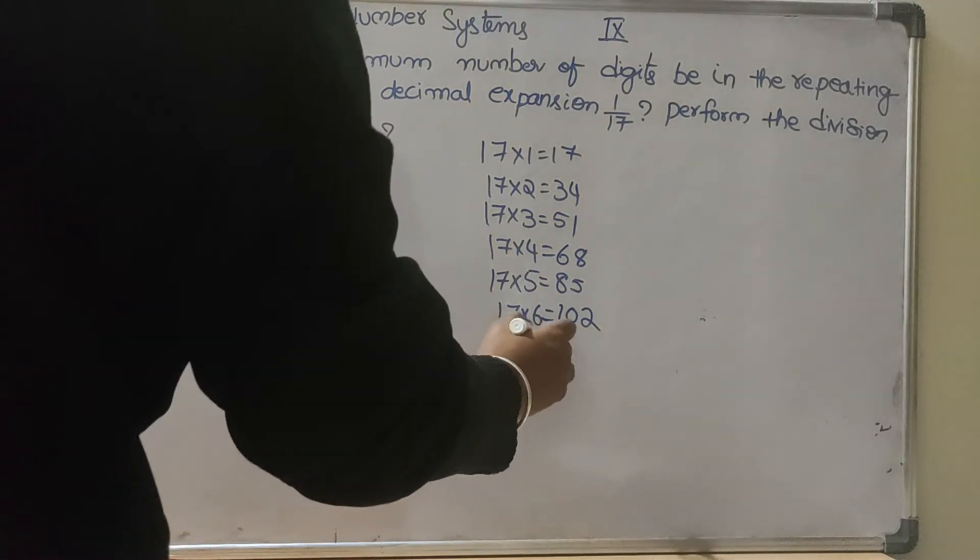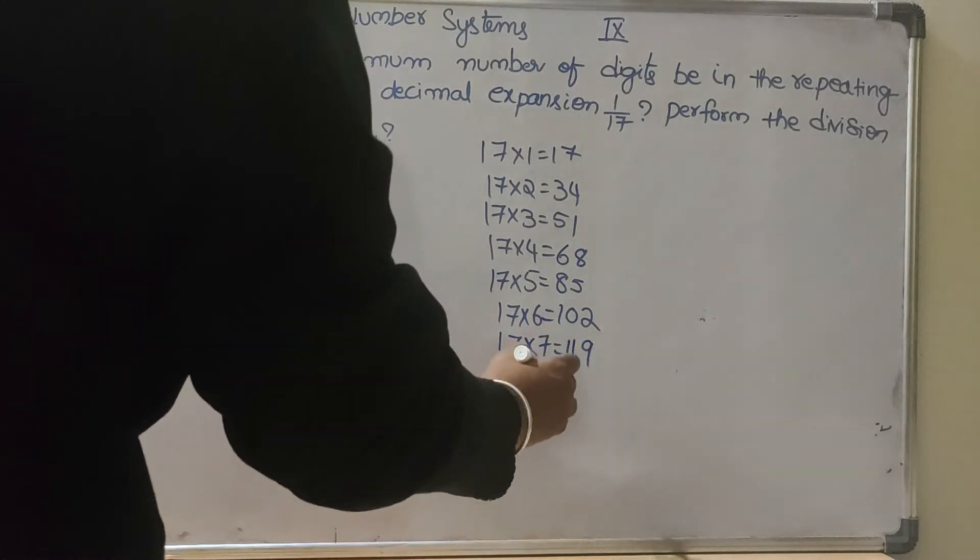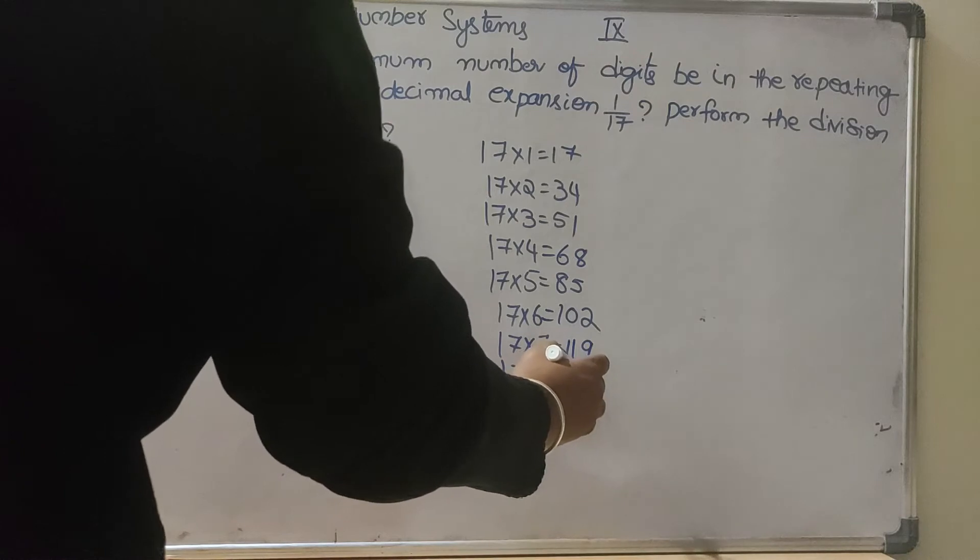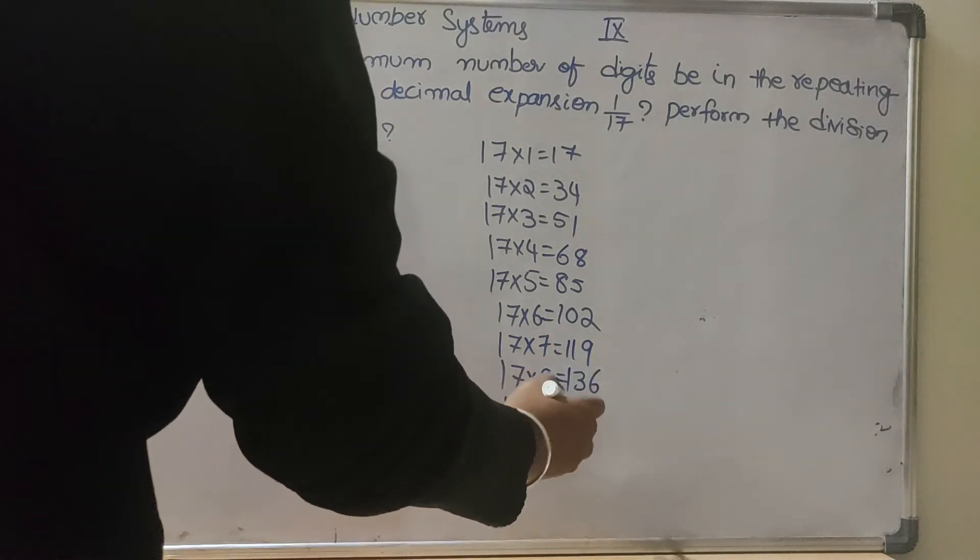17 sevens are 119, 17 eights are 136, 17 nines are 153.